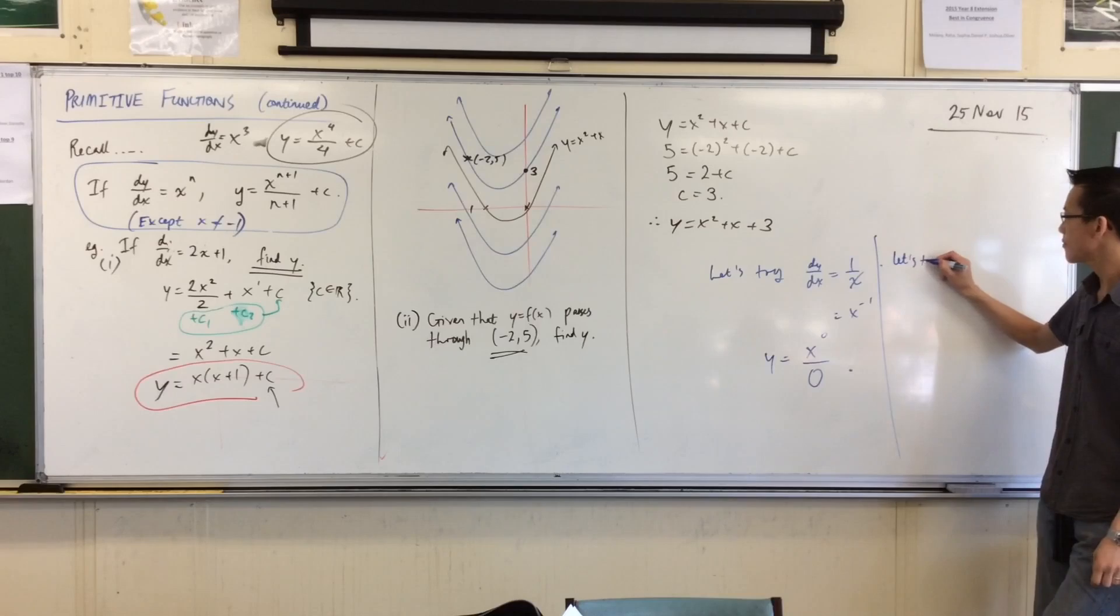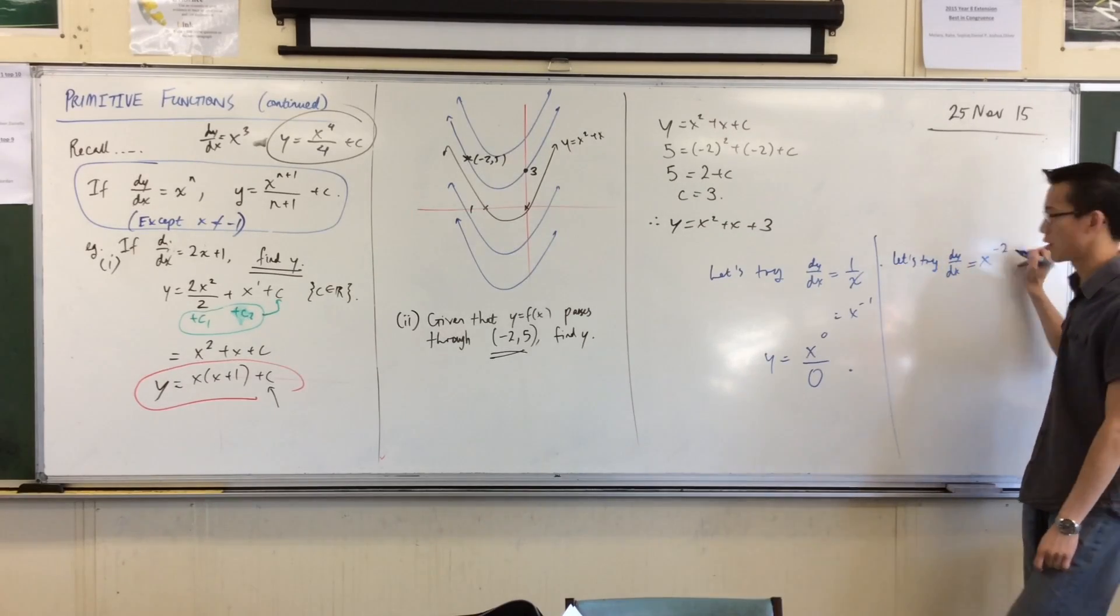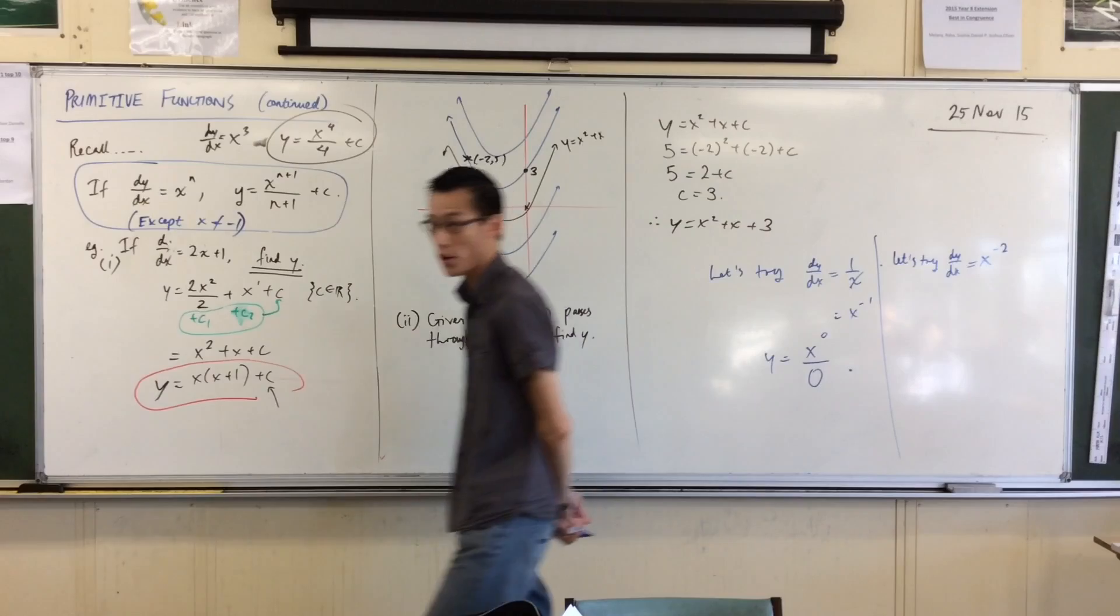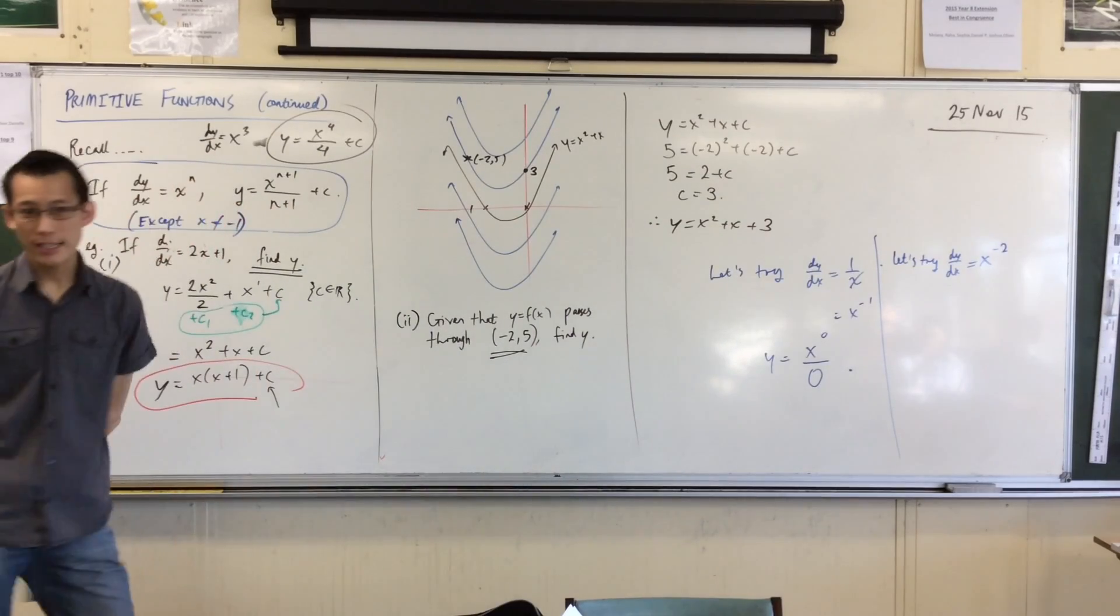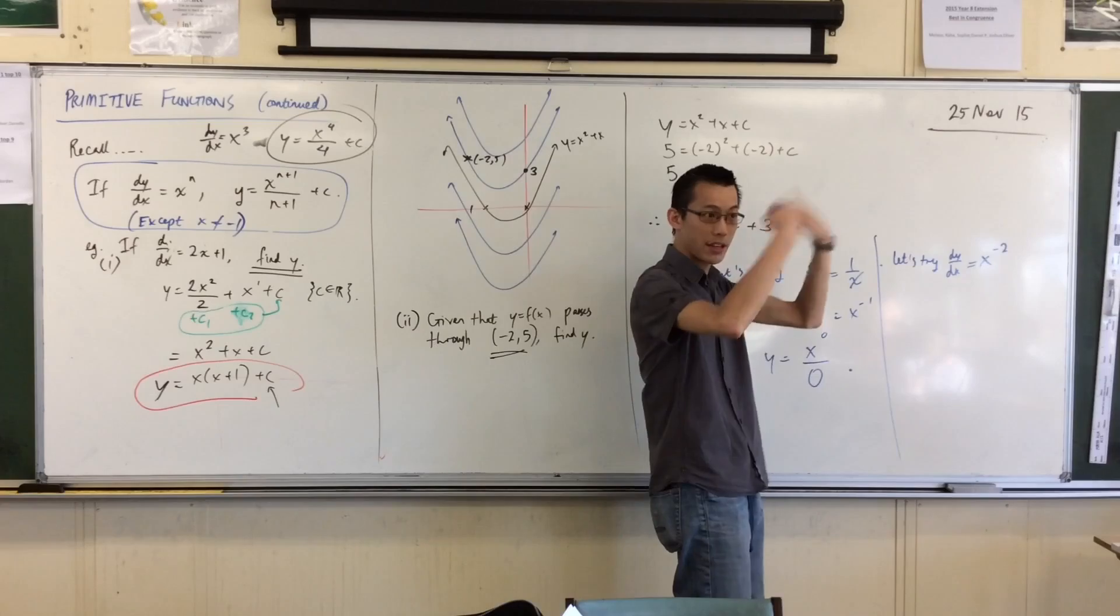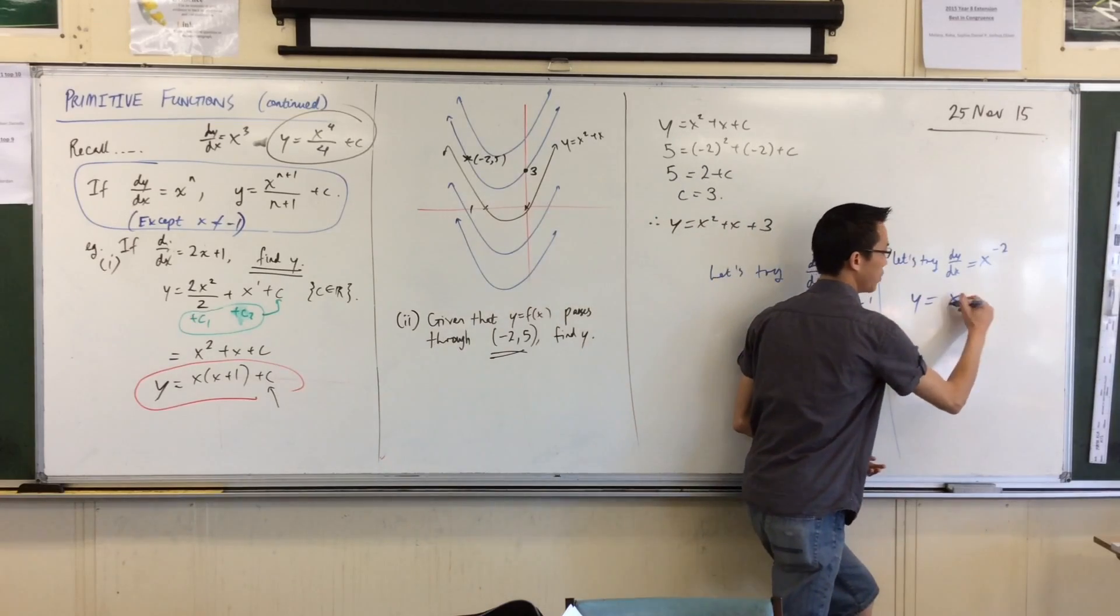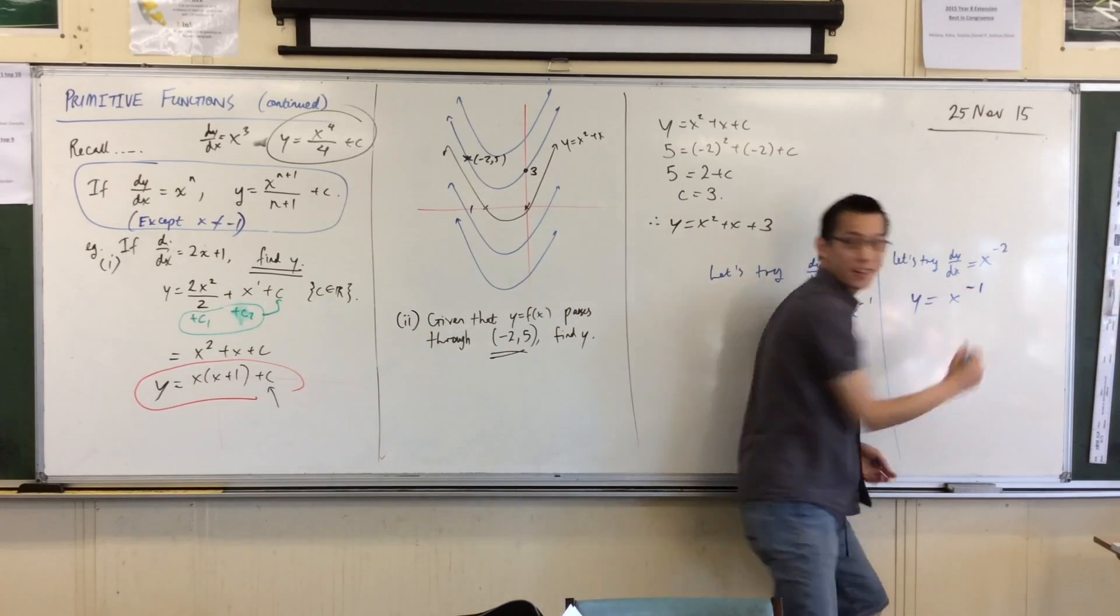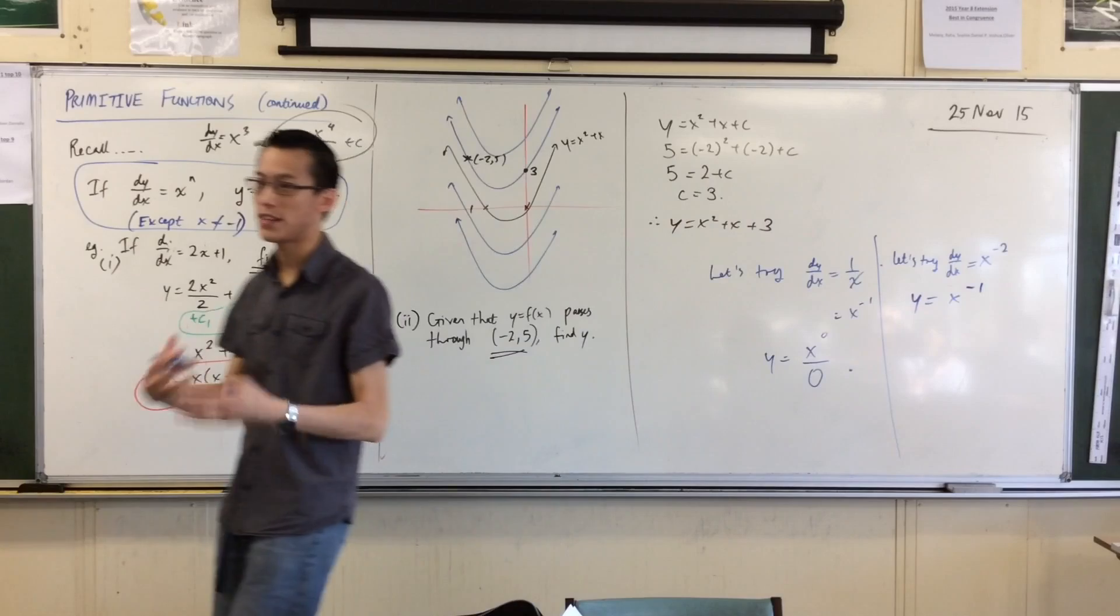Let's try the derivative being x to the power of negative 2. So this is 1 on x squared. Does it work? Let's just give it a shot. I'm going to increase the power, which gives me minus 1. Just watch out for that. You know how I said we're shifting gears?